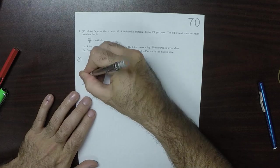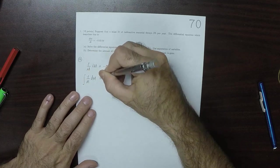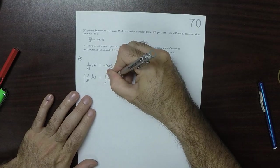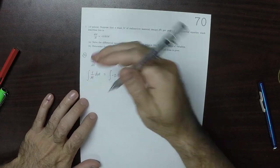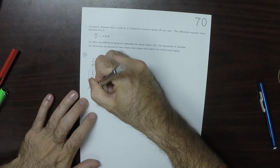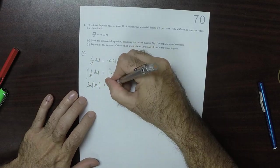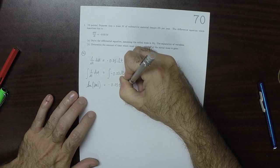And then we can anti-differentiate both sides. That would be log absolute m is negative 0.03 dT plus some unknown constant.